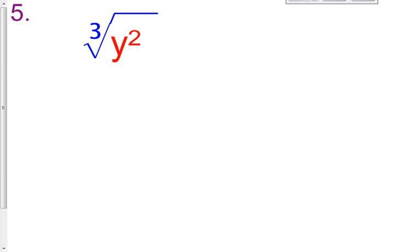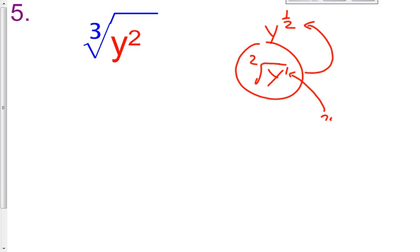So as you learned, when we had y raised to the 1 half, that's the same thing as the square root of y, the square root of y raised to the first. So as we go now from here to here, the 1 becomes our numerator, the exponent becomes our numerator, and the index, this number, is the denominator.